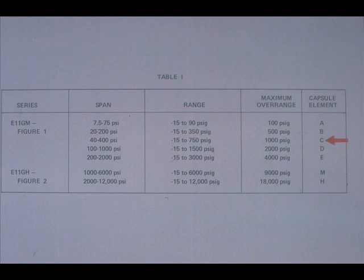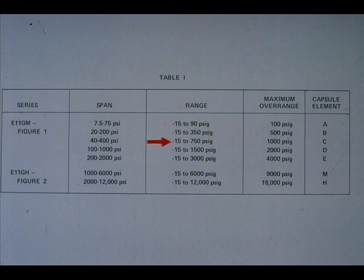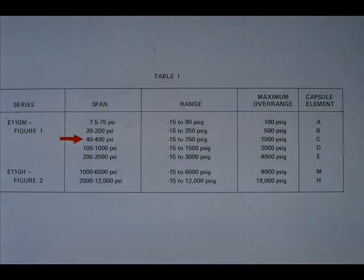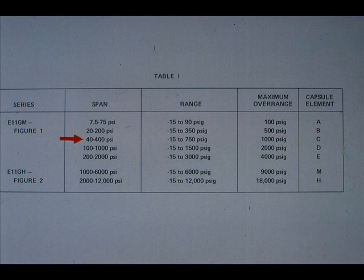Now let's have a look at capsule C. The range limits are minus 15 to 750 PSIG. The span limits are minus 15 to 750 PSIG. Both range and span limits are within our 100 to 200 PSIG range. Therefore, either capsule B or C could be used.